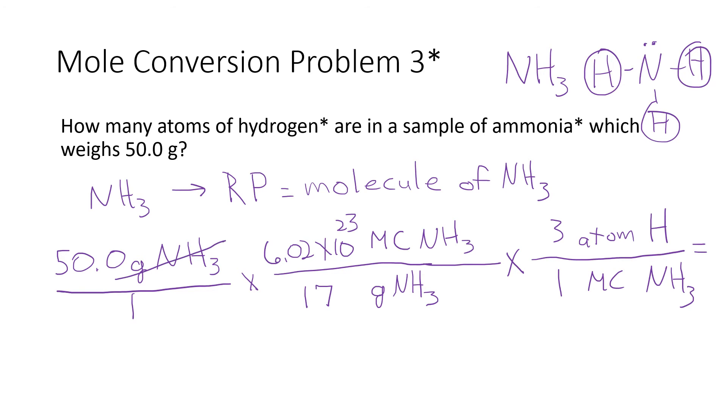If I cross out units, grams of ammonia cancel out with grams of ammonia, molecules cancel out with molecules, and what we're left with is atoms of hydrogen. So we have 50 times 6.02 e23 divided by 17 and times three. That is going to give us 5.31 times 10 to the 24th atoms of hydrogen.